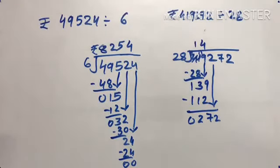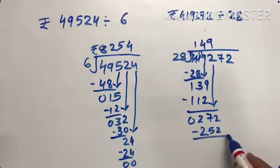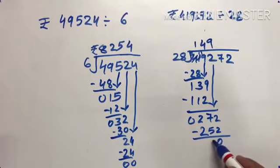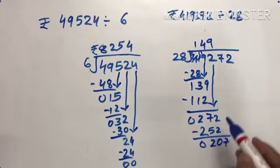272 divided by 28. 28 times 9 is 252. 272 minus 252 is 20. 0, 2, 7, here 0, 7.